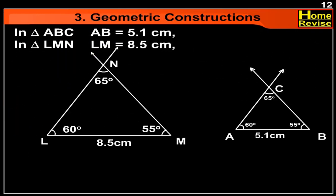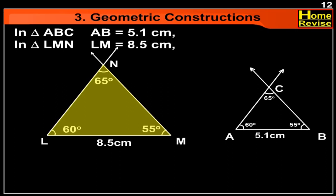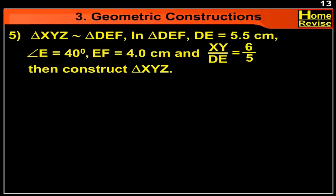The answer is triangle LMN is the required triangle which is similar to triangle ABC. Triangle XYZ is similar to triangle DEF. In triangle DEF, DE is equal to 5.5 cm, angle E is equal to 40 degrees, EF is equal to 4 cm, and XY upon DE is equal to 6 upon 5.